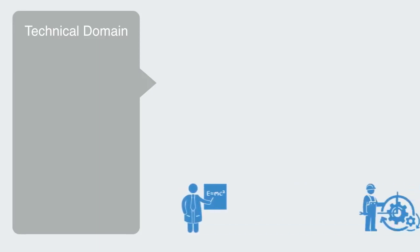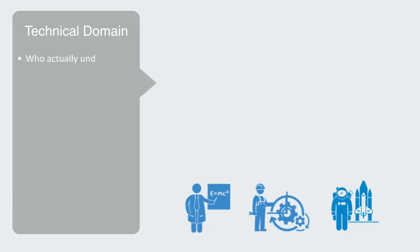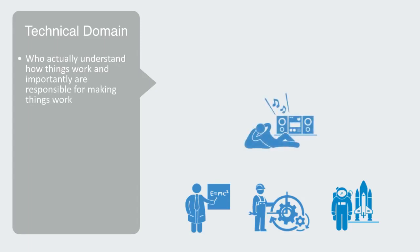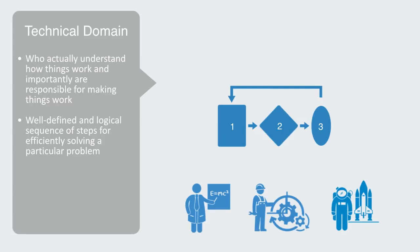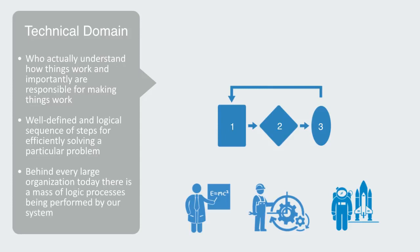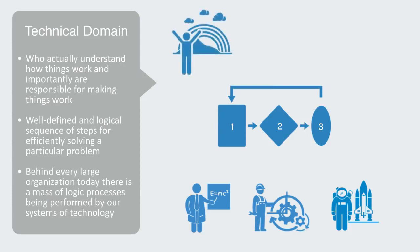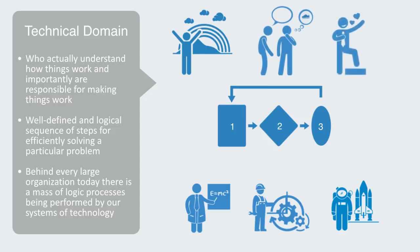The technical domain is conceived of and designed by a relatively small number of scientists and engineers who actually understand how things work, and importantly are responsible for making things work. Most of society has very limited understanding of this and largely takes these technologies for granted. Technology is the product of a process of rationalization, through which we come to a well-defined and logical sequence of steps for effectively solving a particular problem, and then embody this in some physical object or work process. Behind every large organization today, there is a mass of logic processes being performed by our systems of technology. From this perspective, humans look like they go around with their heads in the clouds, wondering about who to marry or what color shoes to wear, without an idea for how things really work.